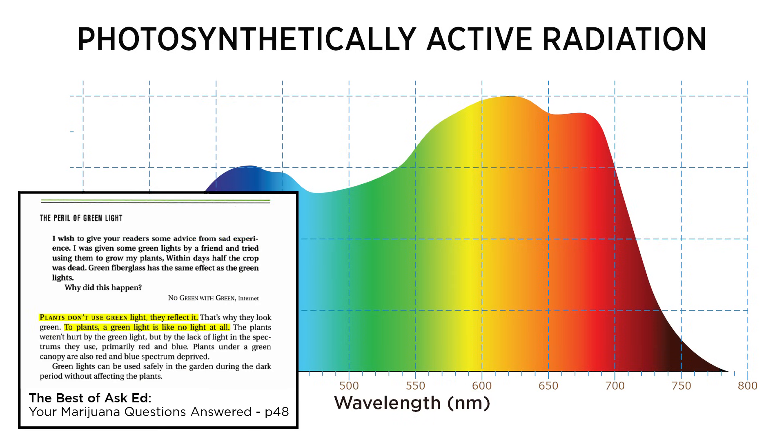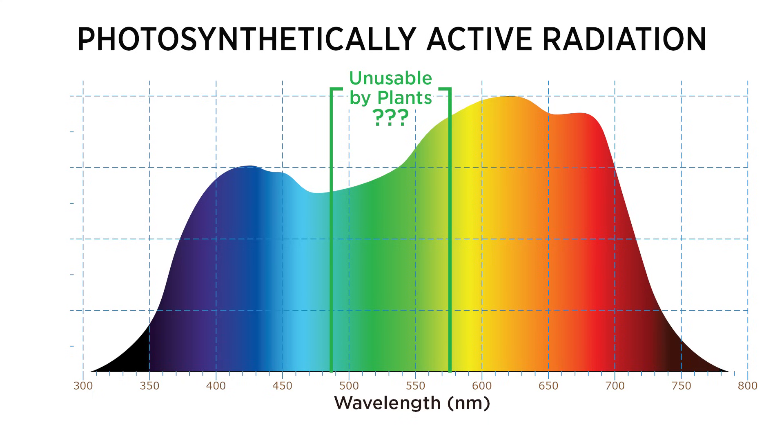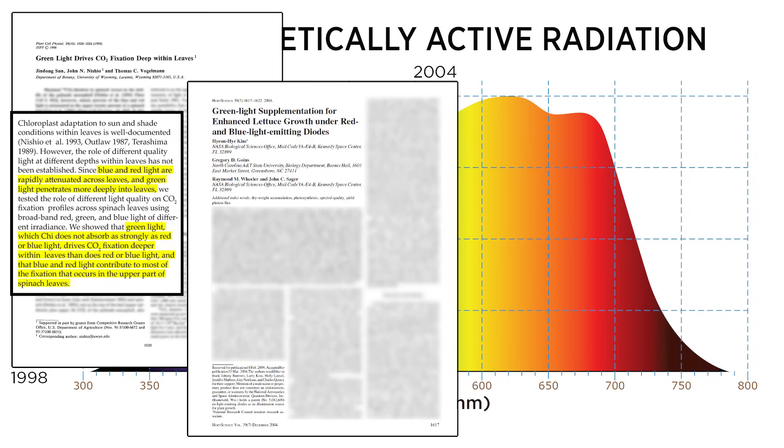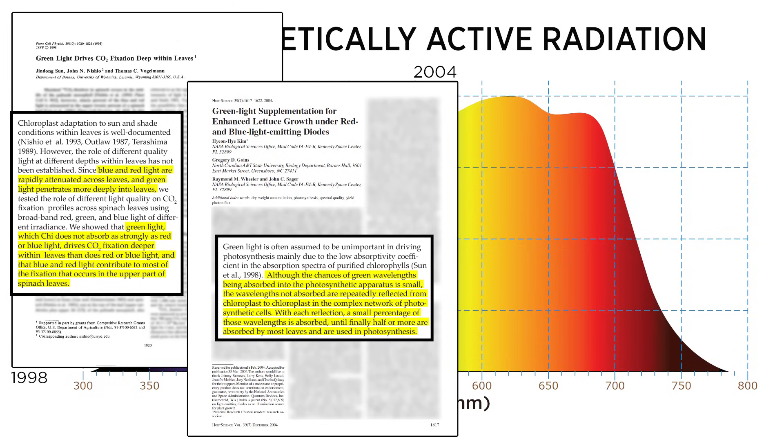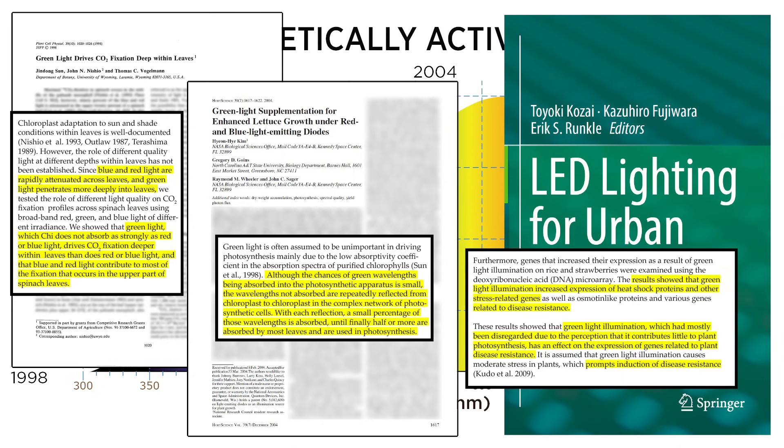Wait a second, don't many growers emphasize blue and red frequencies saying plants don't even use green light? They may refer to green as being completely wasted light. Well, for decades, researchers have demonstrated that green light serves a useful function and is capable of driving photosynthesis. In fact, recent research is revealing some unexpected benefits of green light, even helping with organic pest control.